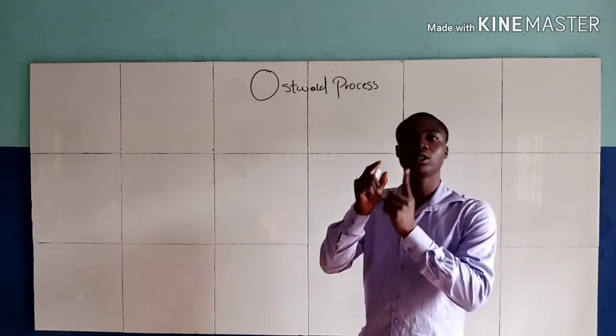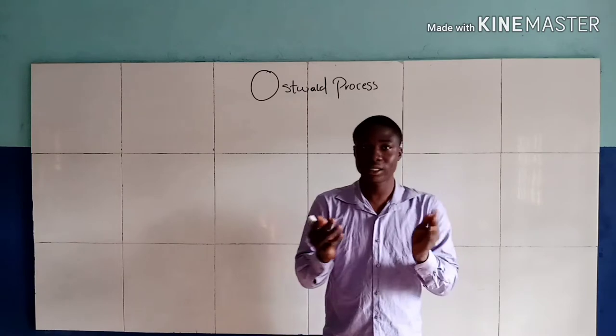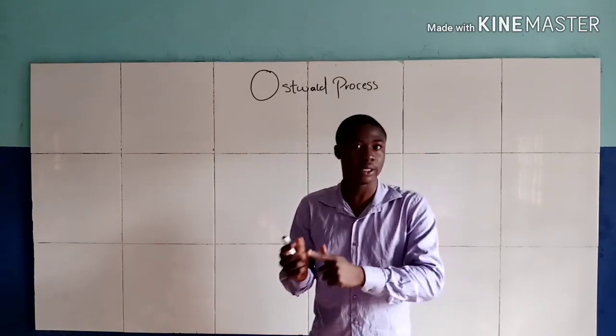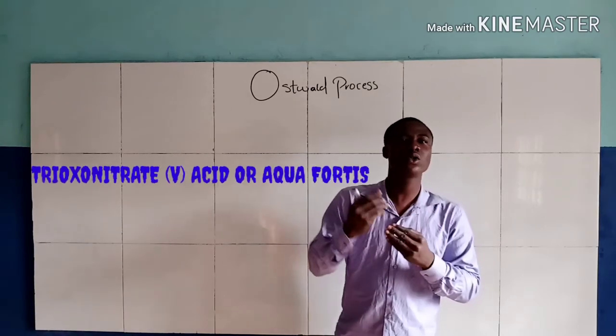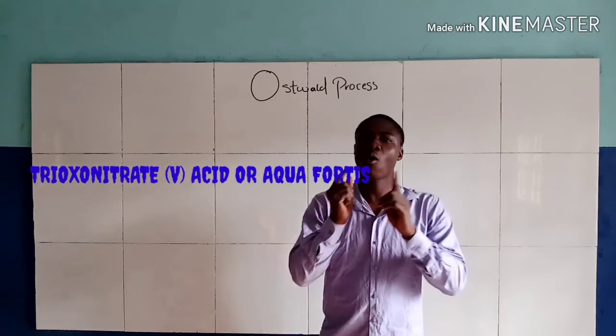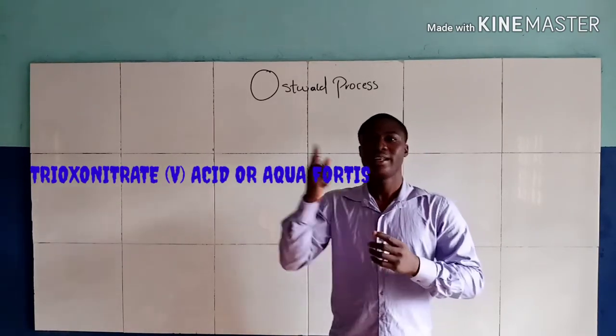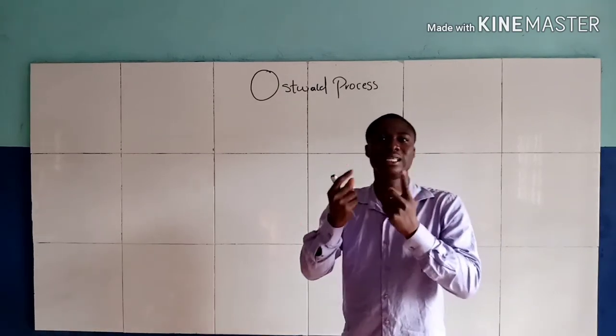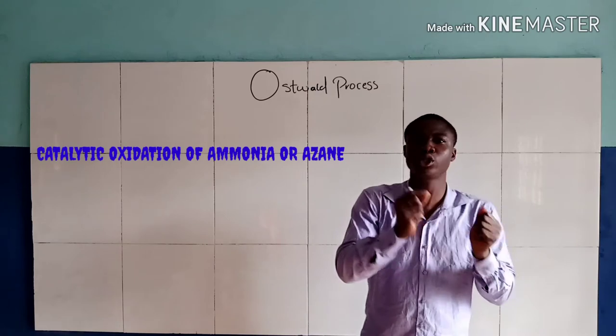Now, the Ostwald process is the process used in the manufacture of HNO3, that is trioxonitrate 5-acid or aqua fortis. Now, the Ostwald process is also called the catalytic oxidation of ammonia.